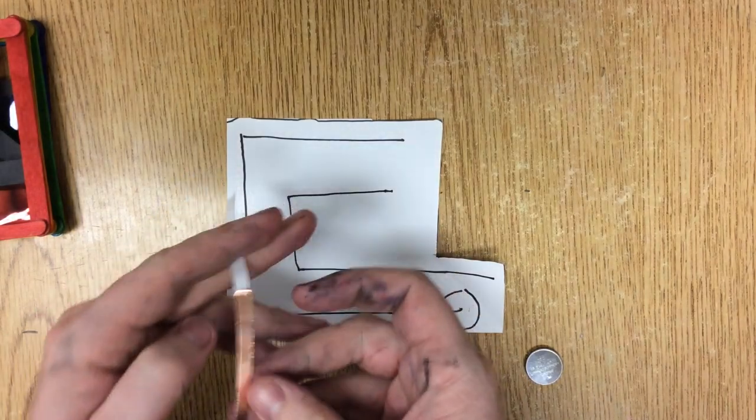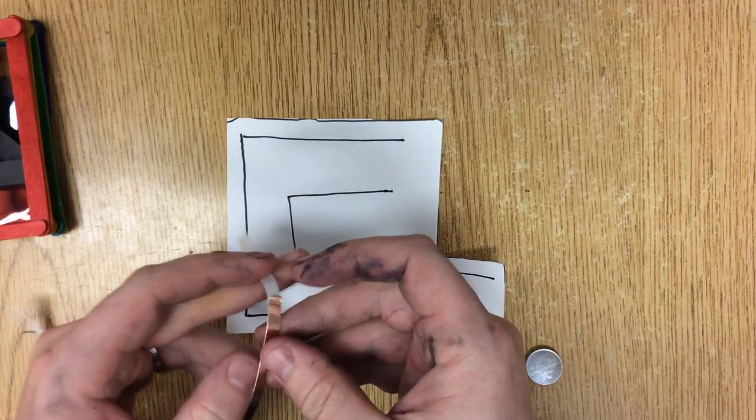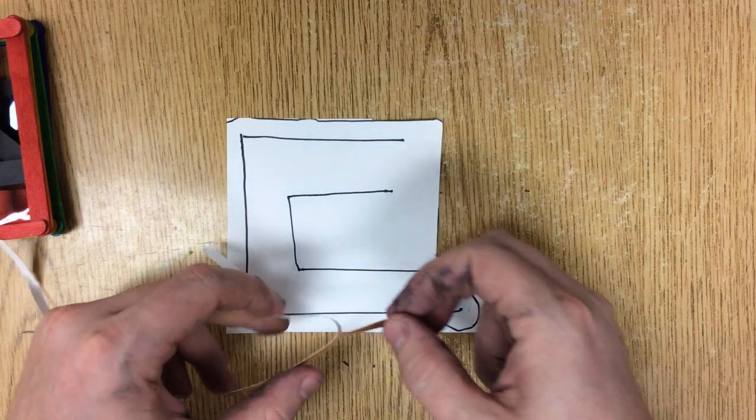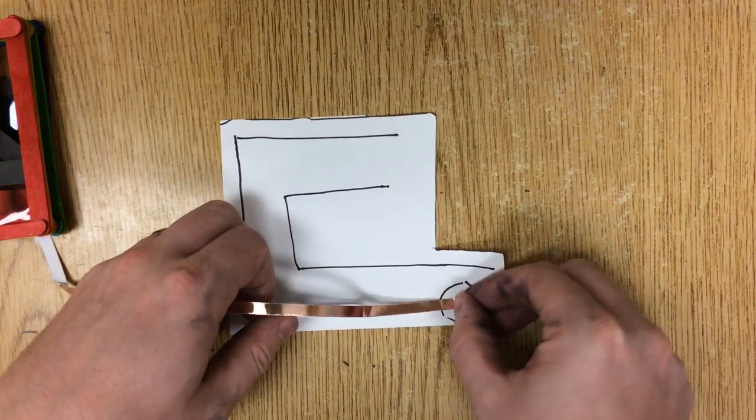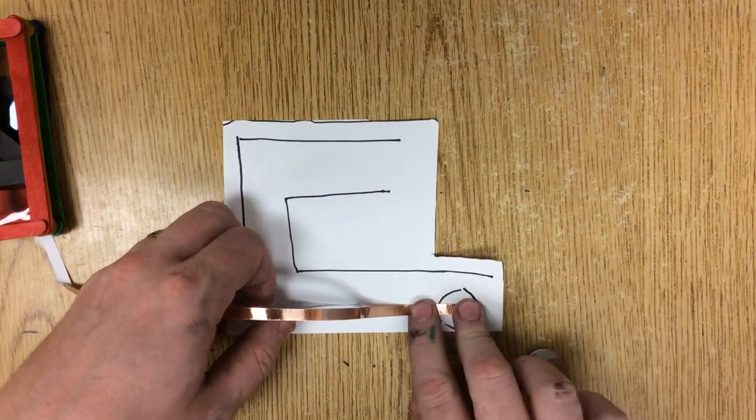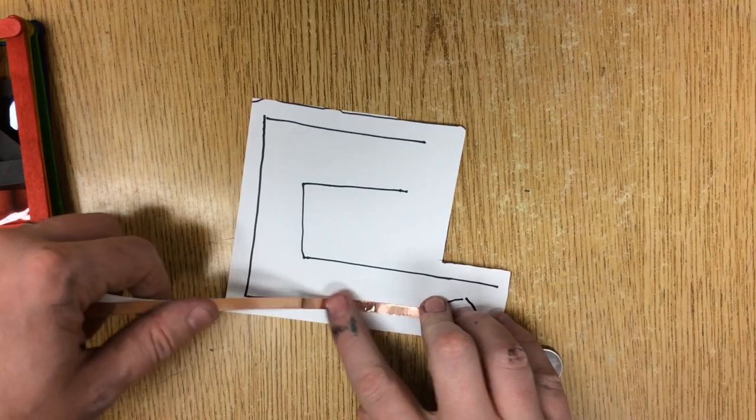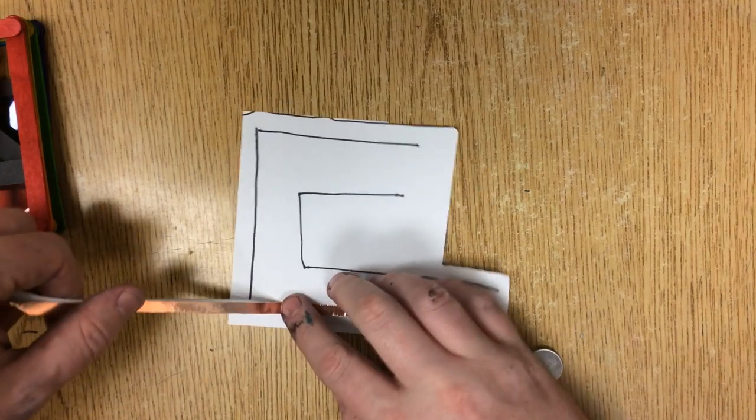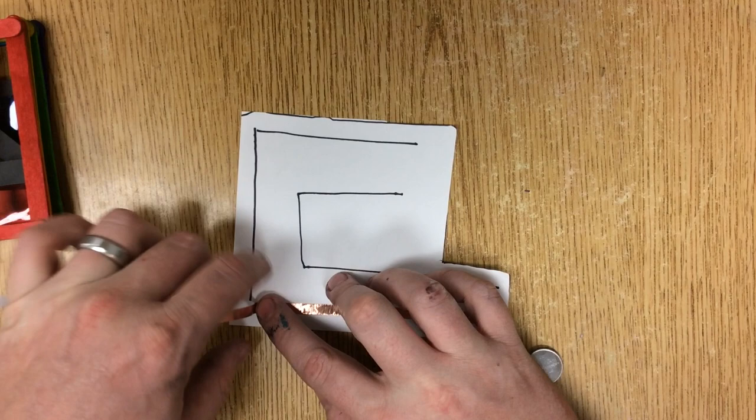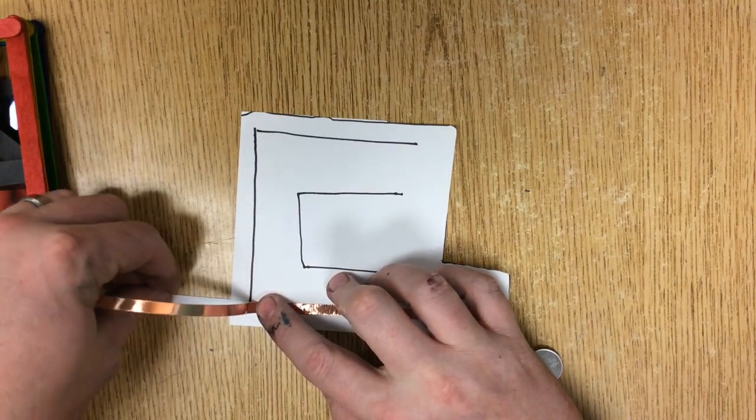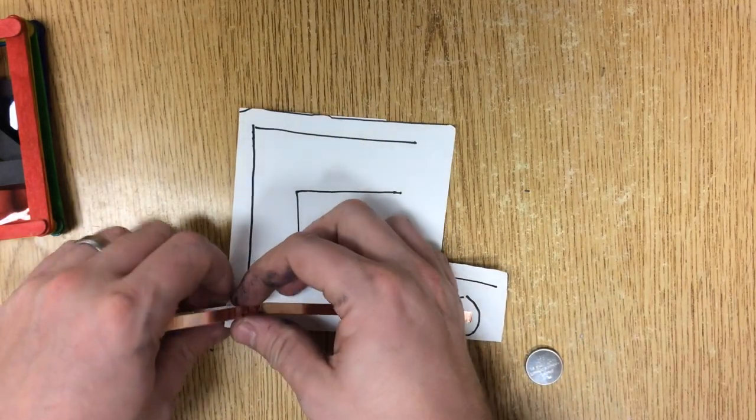It's going to sort of be two C shapes of copper tape. Now one trick that I have found that makes all the difference in the world is I peel off the end. I don't peel off the entire piece of copper tape. I peel and stick as I go. That makes it a lot easier so that the copper tape doesn't curl up and get stuck to itself.